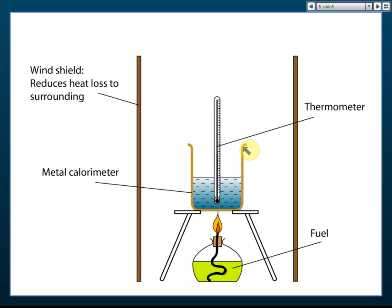We can also include the energy absorbed by the calorimeter. Once we know how much heat was absorbed and how much fuel was burned, we can find the heat of combustion: heat of combustion equals thermal energy change per mole of fuel burned. However, this apparatus gives only an approximation because not all heat is absorbed by the calorimeter — part of it radiates to the surroundings.